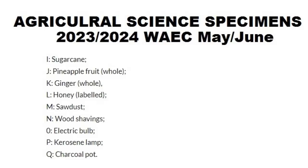Specimen I is sugar cane. Specimen J is pineapple fruit — a whole one. Specimen K is ginger — also a whole one. Specimen L is honey, labeled — meaning it should be named and labeled as honey.